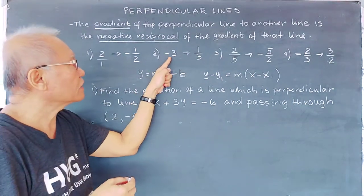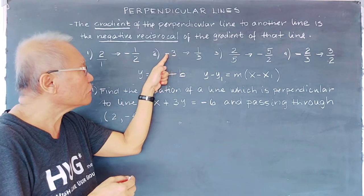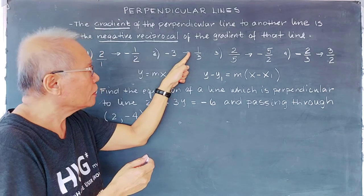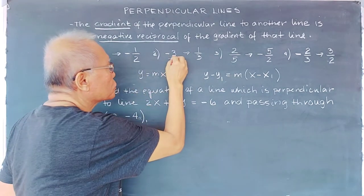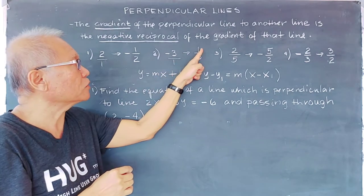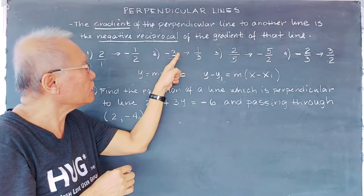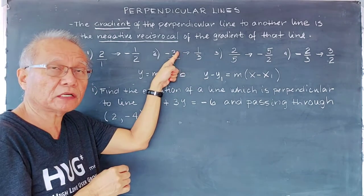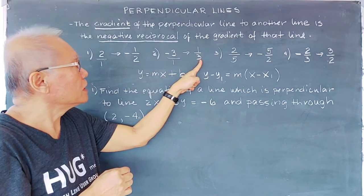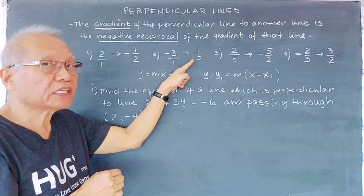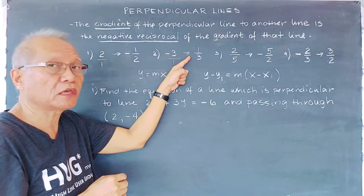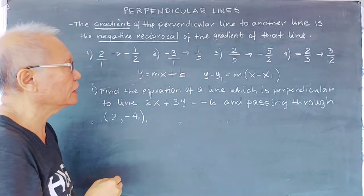Here we have negative 3. Since it is negative, we will change it to positive. And this one is actually over 1, so the 1 becomes the numerator of the second line. The negative reciprocal of negative 3 is positive 1 over 3.